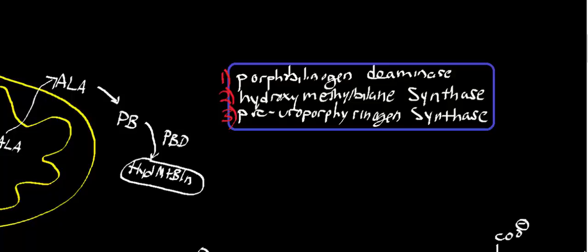It actually occurs via an E1 mechanism — a unimolecular elimination — which is very rare in biochemistry, but that's the theorized mechanistic step. The last two names give you an idea of the final product. Hydroxymethylbilane and pre-uroporphyrinogen are the same molecule. Pre-uroporphyrinogen is not the common name; the common name is hydroxymethylbilane. All three enzymatic names mean the same enzyme.